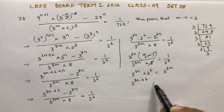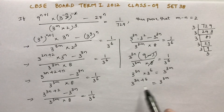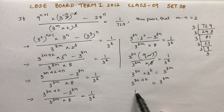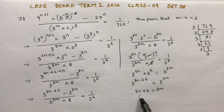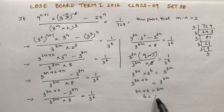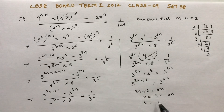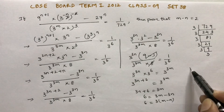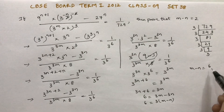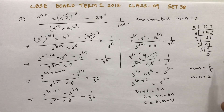So 3 power 3n plus 6, because bases are the same so we can add the powers. Now bases are equal so we can equate the powers: 3n plus 6 equals 3m, so 6 equals 3m minus 3n. Taking 3 common gives m minus n, so m minus n equals 6 by 3, which is 2. Hence m minus n equals 2.